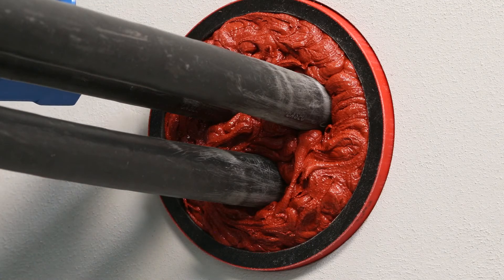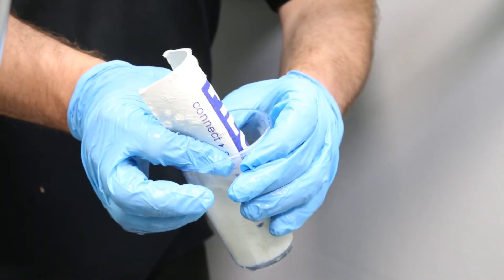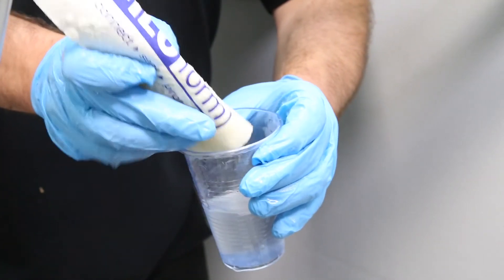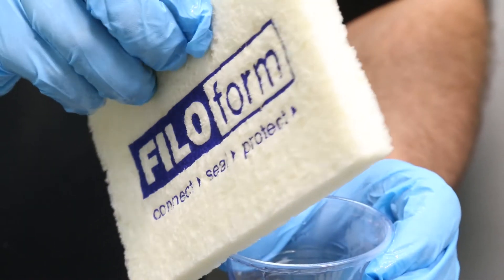In order to finish the seal, use the provided finishing cloth by first immersing it in water. The cloth is made of a special material that will not stick to the MD Plus sealant so long as the cloth remains damp.